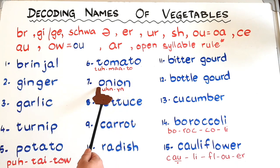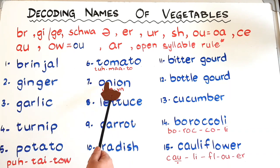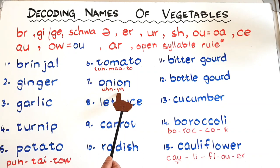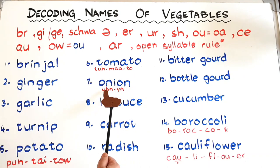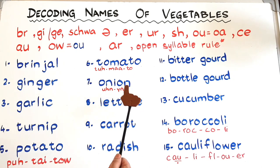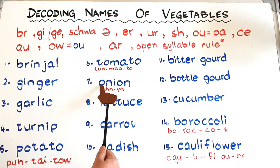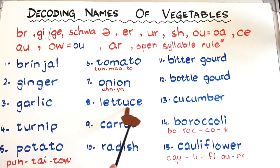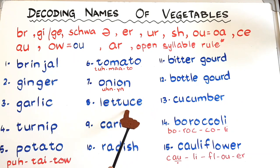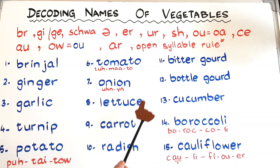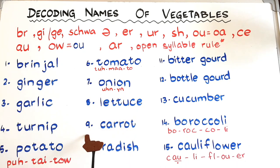At number seven we have another tricky spelling: onion. Here O is saying the schwa sound 'uh', then N, then 'ion' — it's 'onion'. The spelling is simple: you have an I in the center with O-N on each side — O-N-I-O-N. At number eight we have lettuce. The soft C rule applies, but remember: don't say it 'let-use' because of the magic E. Here E is not a magic E; it's just making the C soft. The word is 'lettuce'.